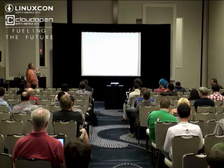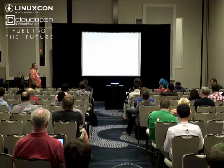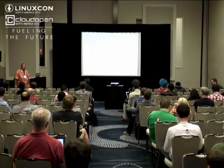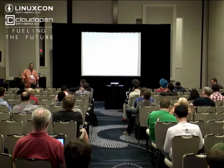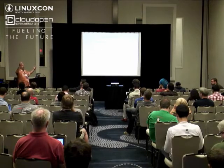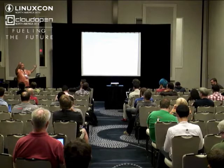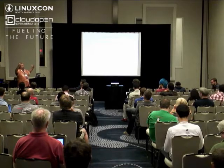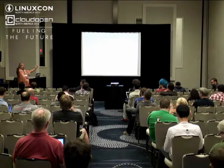The user namespace is the most recent one and it virtualizes UIDs and GIDs. So you can have a user 1000 in two separate sibling namespaces that have no correspondence to one another — that user 1000 in one namespace can't look at the other's files and vice versa.